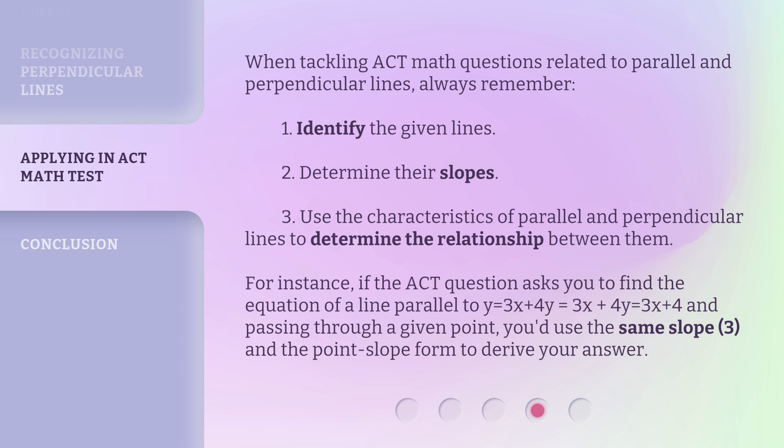For instance, if the ACT question asks you to find the equation of a line parallel to y = 3x + 4 and passing through a given point, you'd use the same slope (3) and the point-slope form to derive your answer.